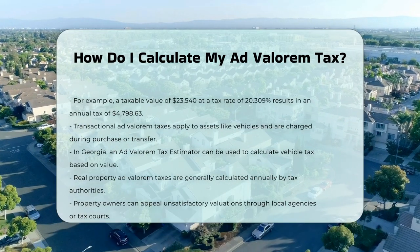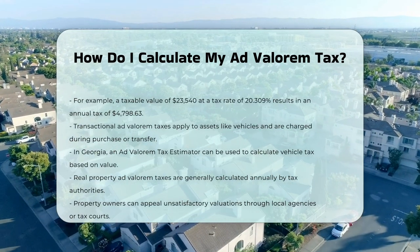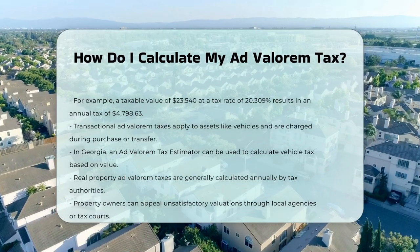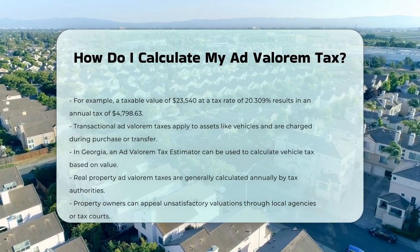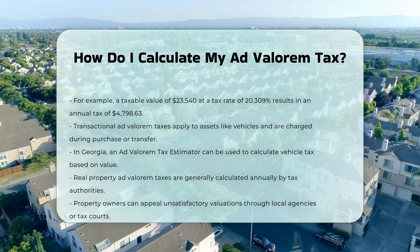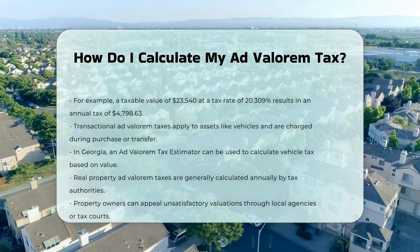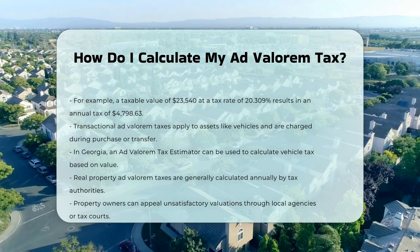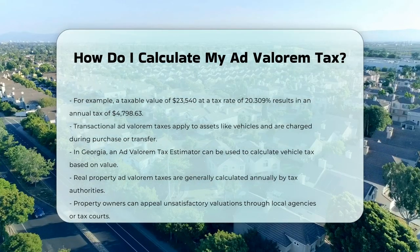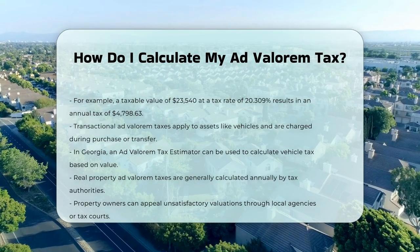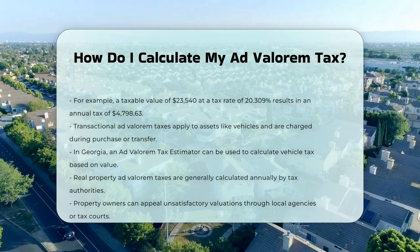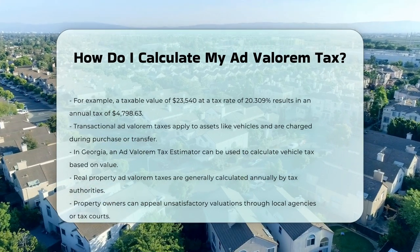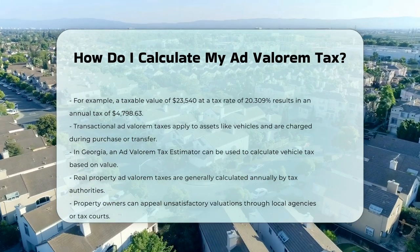Annual property taxes. For real property, ad valorem taxes are typically calculated on an annual basis. The tax authorities determine the fair market value of the property, apply any exemptions, and then calculate the tax based on the local tax rate. If property owners are unsatisfied with the valuation given by the tax authorities, they can file an appeal at the local level, a higher agency, or at the tax court.